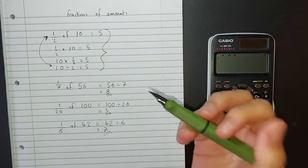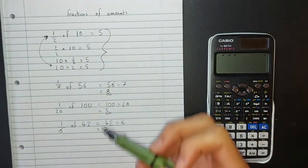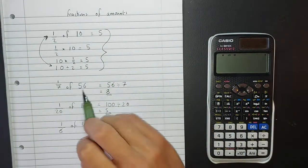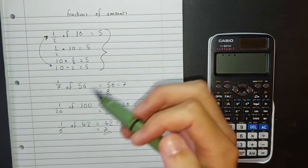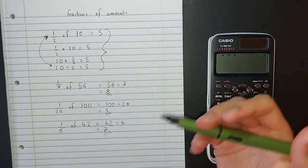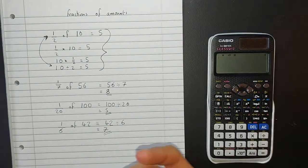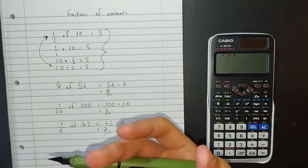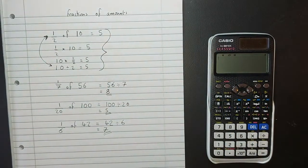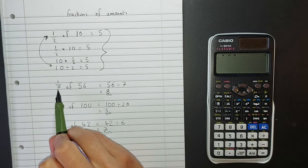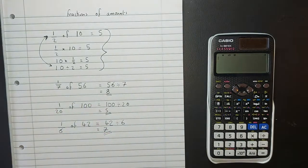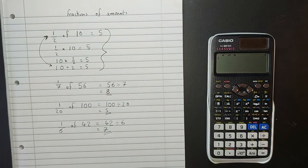But first of all, when we're looking at unit fractions, you need to be happy that if you're ever finding, I don't know, a seventh of something, you just divide it by seven. If you're ever finding a twentieth of something, you just divide it by twenty. If you're ever finding, I don't know, a one forty-seventh of something, you just divide it by forty-seven. So you take whatever the denominator is of the number, and that's what you're dividing this by to find out what one of them is.